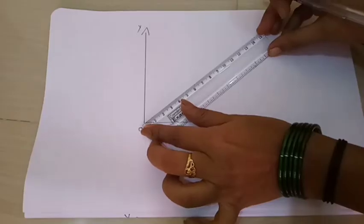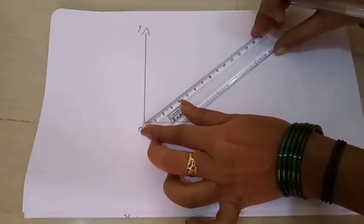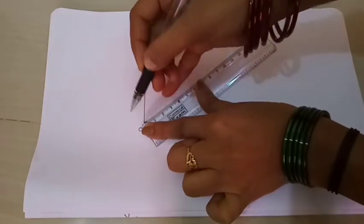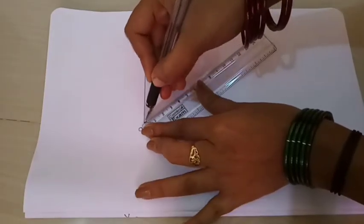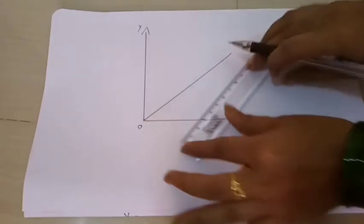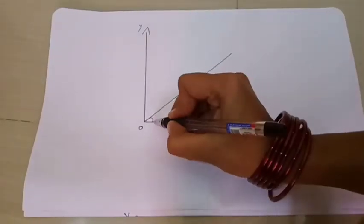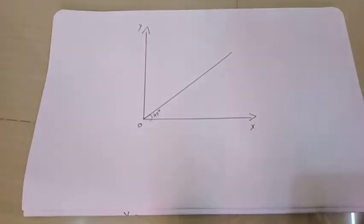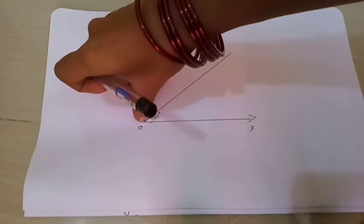First, we need to draw the X axis and Y axis. After this, the first line we have to draw is the supply curve - the aggregate supply line. Draw it right from zero at a 45 degree angle, making the graph into two equal parts. You need not use a protractor, just draw from the middle at zero.